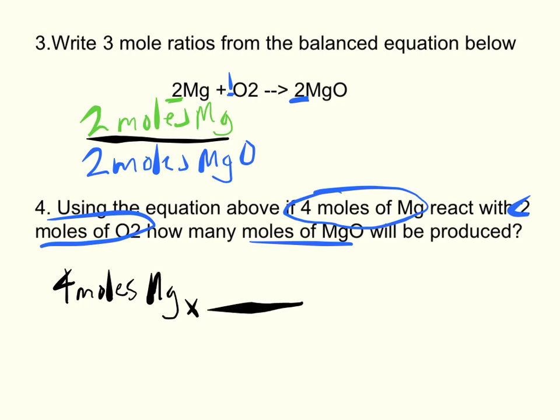We have to multiply this by a mole ratio. Moles of Mg in the equation is two moles of Mg. We've got to convert to our unknown as moles of MgO. That's up here, two moles of MgO.